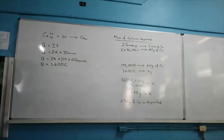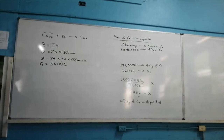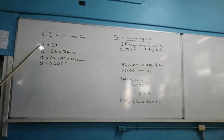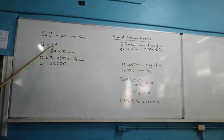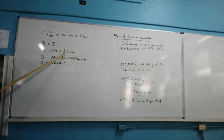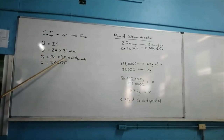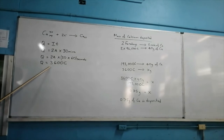The question states that 2 amperes of electricity flow through molten calcium chloride for 30 minutes. To calculate the quantity of electrical charge flowing through the circuit, we use the formula Q = IT, where T is measured in seconds. So we convert 30 minutes to seconds: Q = 2 × 30 × 60, which gives 3600 coulombs.